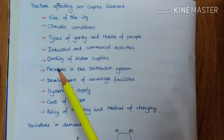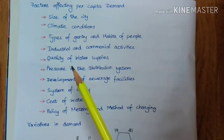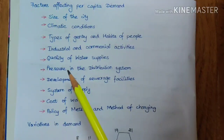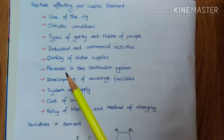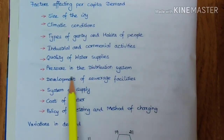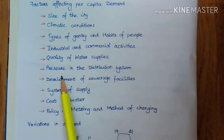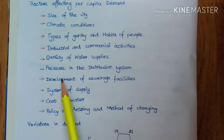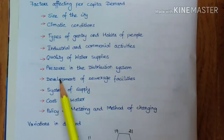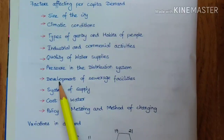The next factor is the quality of water supply. If the quality is good, water consumption will be more. Industries need very good quality water for their boilers, so when the municipal water quality is good, they won't install their own water treatment units and will use the available municipal water. The next factor is pressure — when pressure is more, water consumption is also more. For example, in high-rise buildings, if pressure is sufficient, water can reach all floors easily, increasing overall consumption.